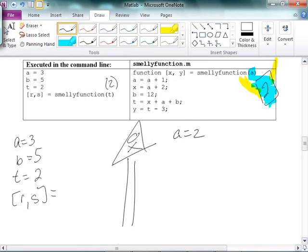And the next line says that A is actually equal to A plus 1. So A gets overwritten to 3. Then it says that X is equal to A plus 2, so 5. Then B is 12. And then T is X plus A plus B, which is 5 plus 3 plus 12, which is something like 20. So T is equal to 20. And then Y is equal to T minus 3. So Y is equal to 17.